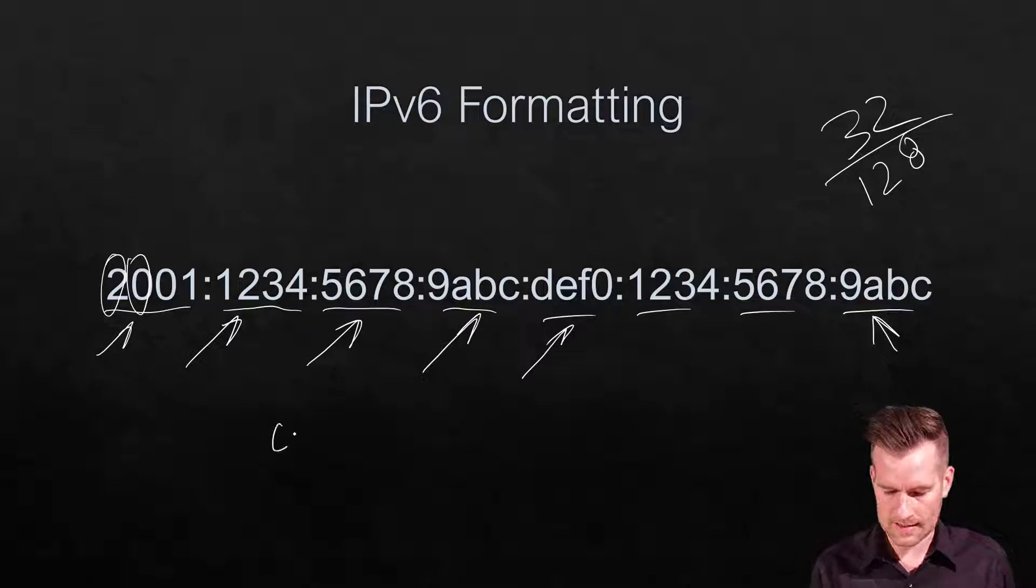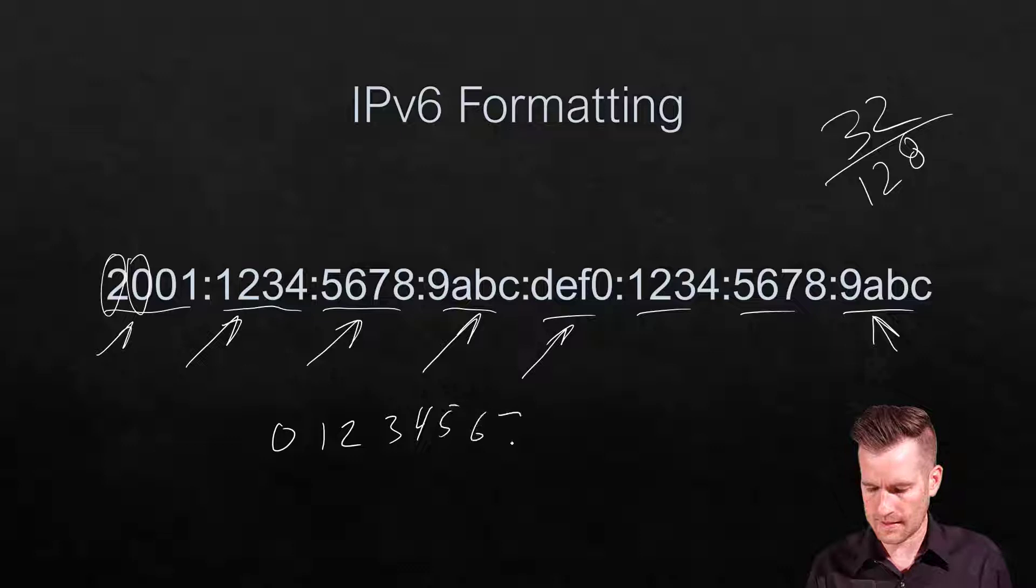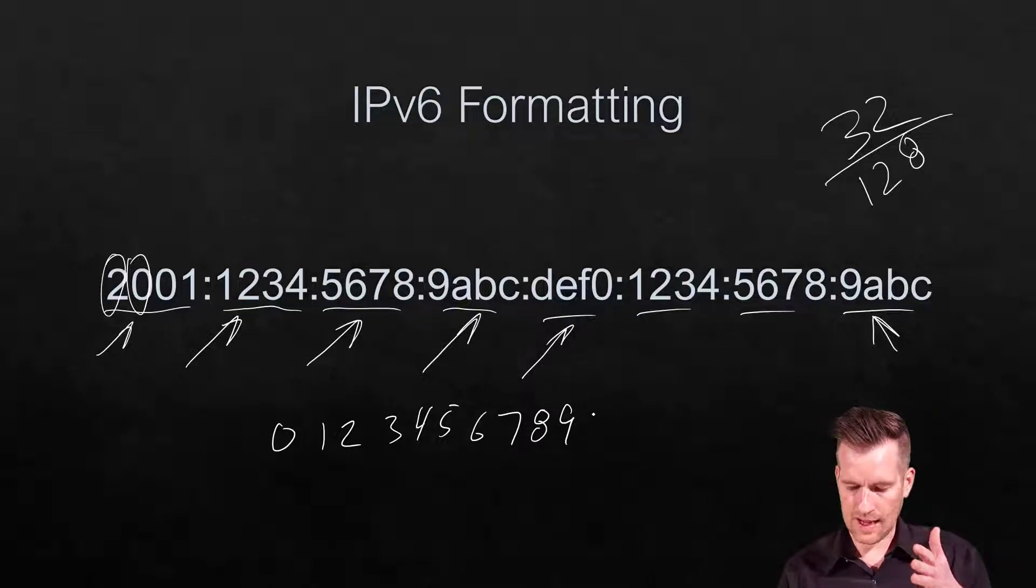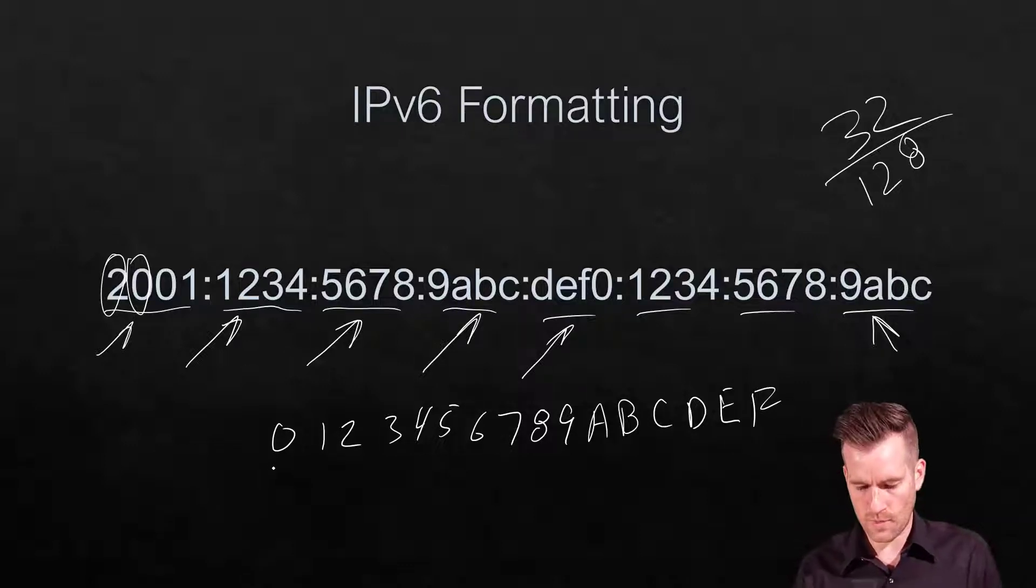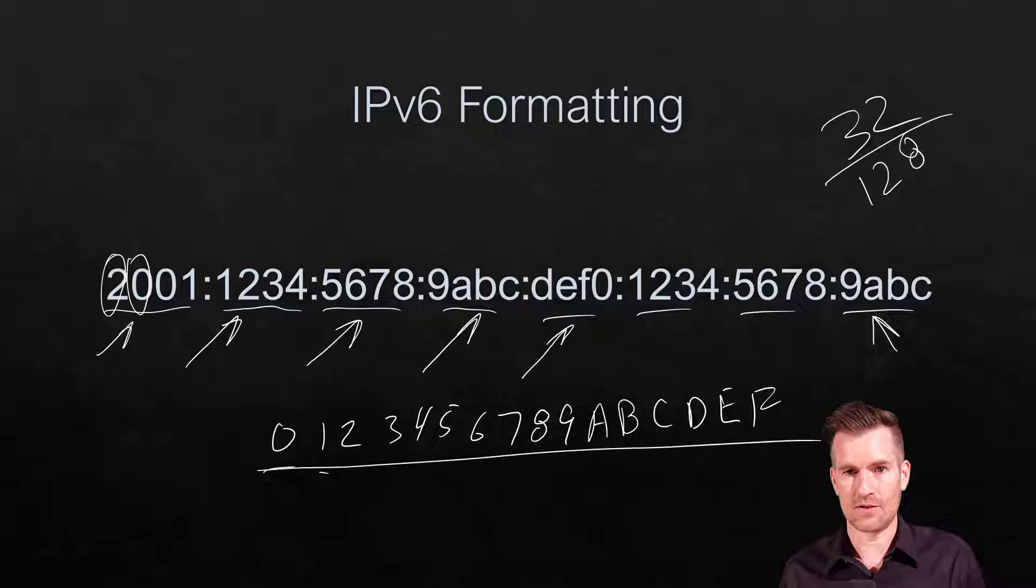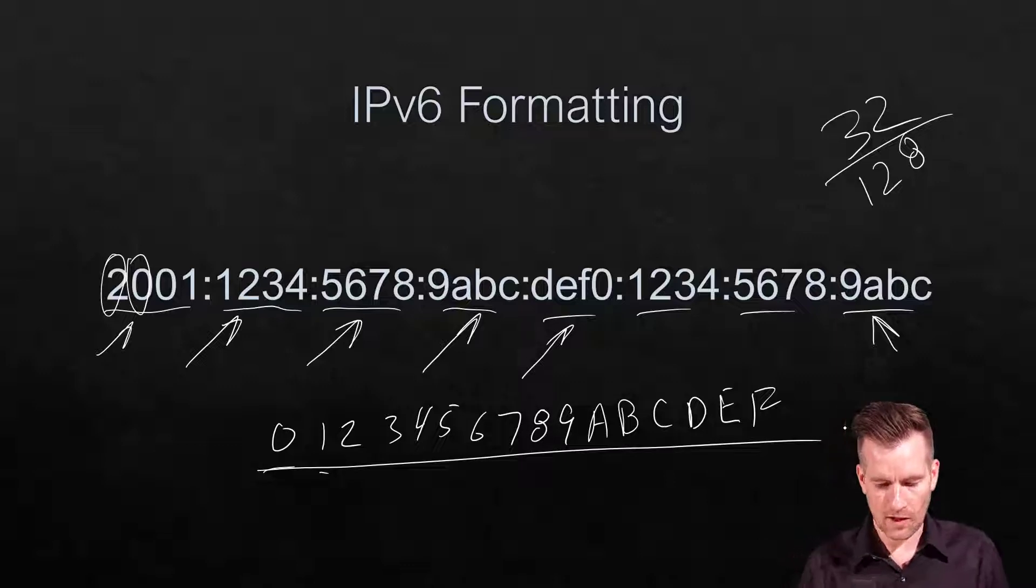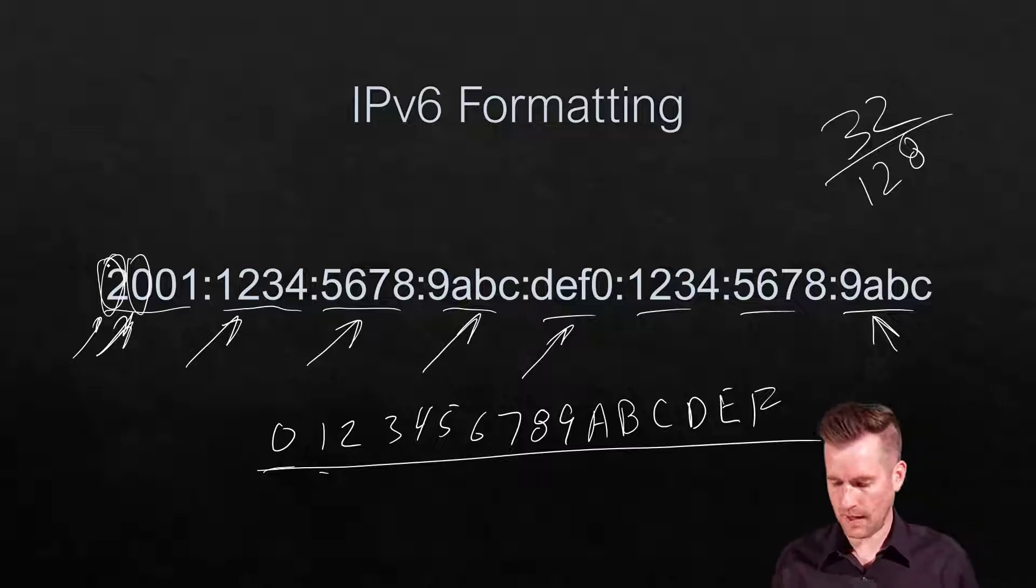Each hextet is represented in hexadecimal form, which uses digits 0 through 9, and then 10 is A, 11 is B, C, D, E, and F. Each hexadecimal digit represents four bits.